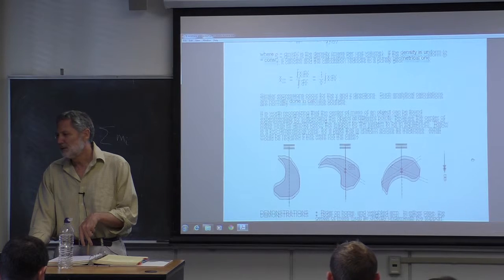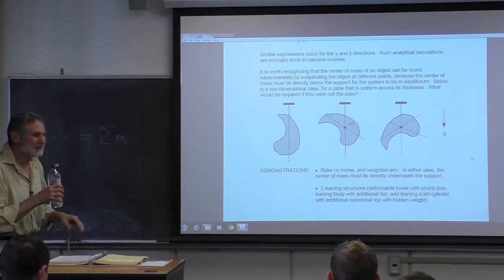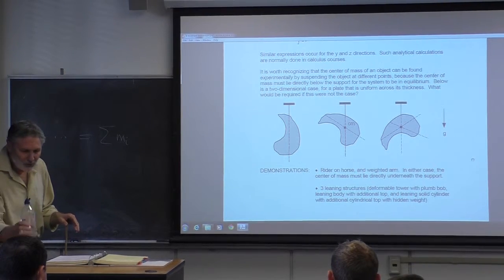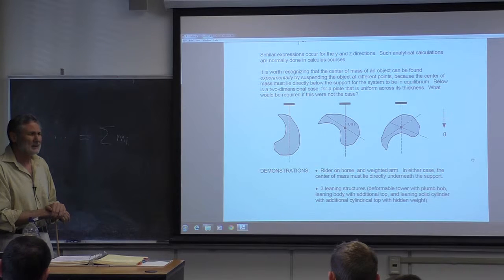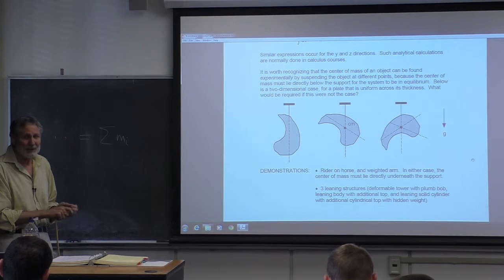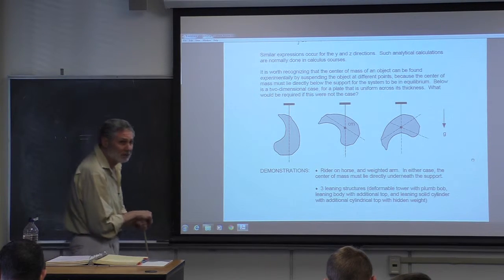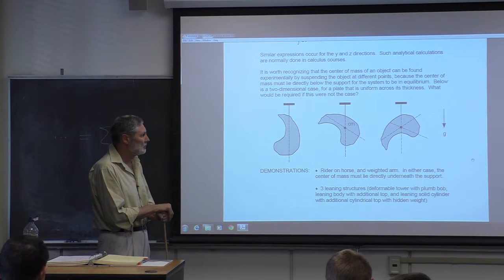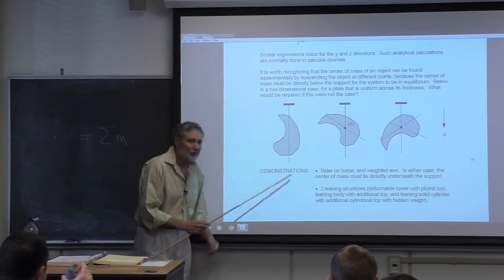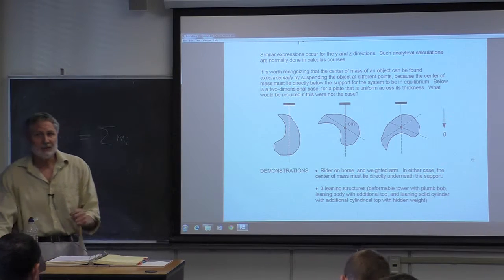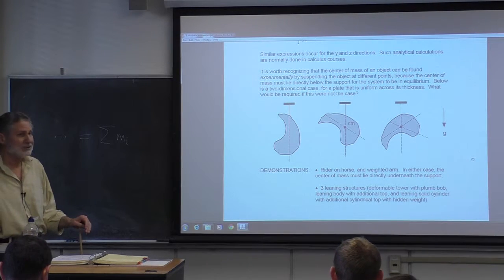Any questions? Now, that's analytical — we can analytically determine the center of mass. You're probably guessing the center of mass must be important, because I'm spending all this time talking about it. It is important, and we'll start to see why today. You don't have to do it analytically — for irregular shapes, you often need a computer. But there's a simple experimental way to do it.